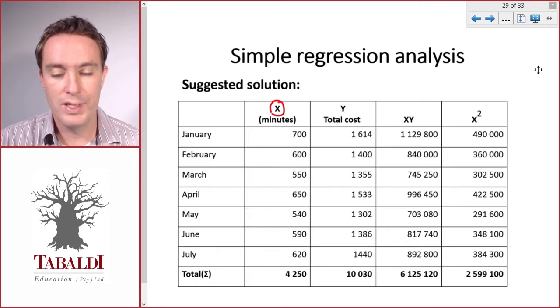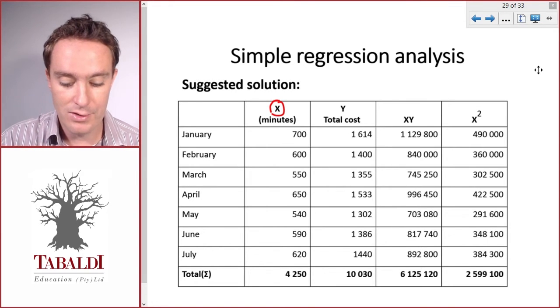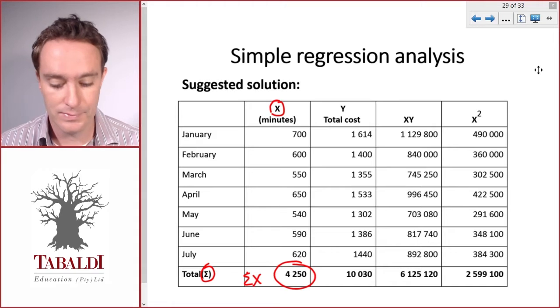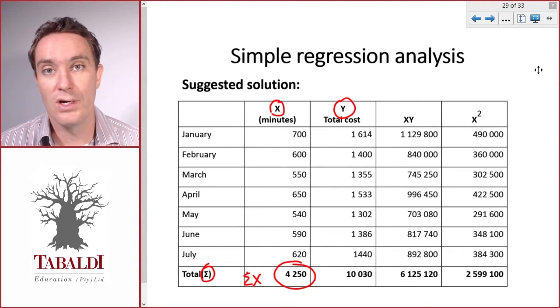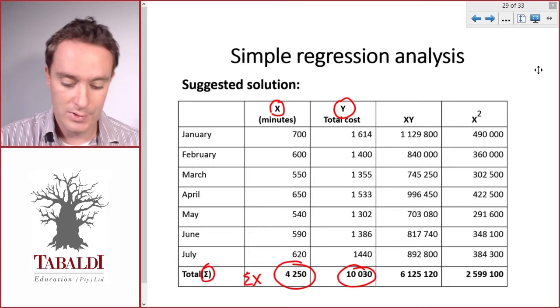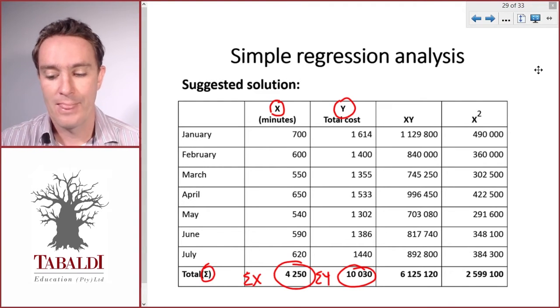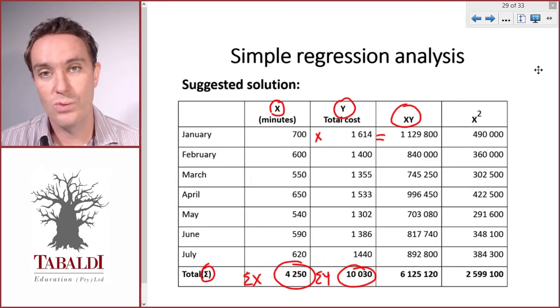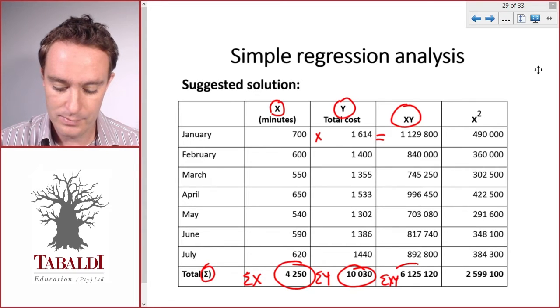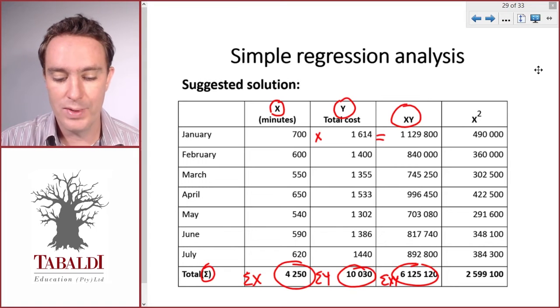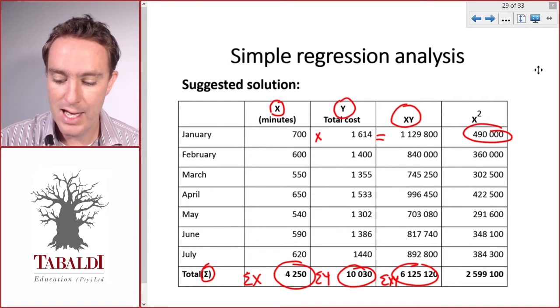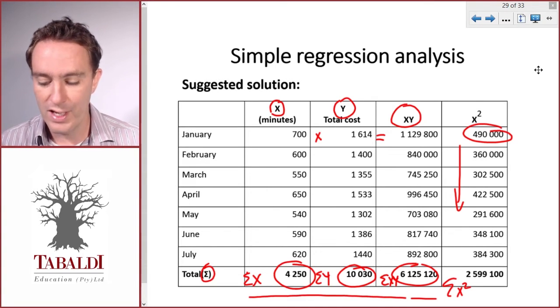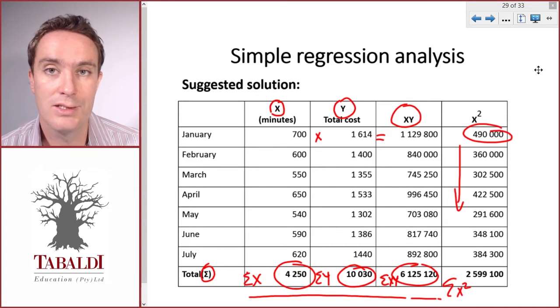Here I've already done that. Our first column would be just all our activity levels for each month, so the sum of x. This sign here basically means sum or total. Next column, we have our y's or our costs, so the sum of all our costs. Then we multiply each x times each y to get the xy, and then we can sum that, the total. And then finally, x squared, which would be the activity level times itself. We can sum all of that. So now we have all four values here at the bottom that we need to solve our two equations simultaneously.